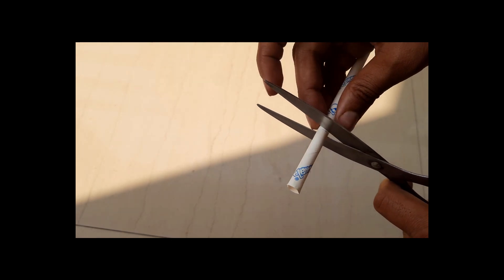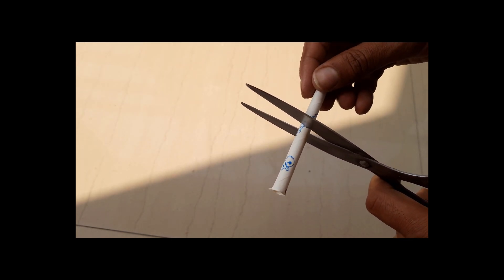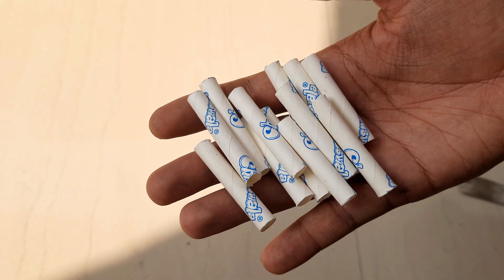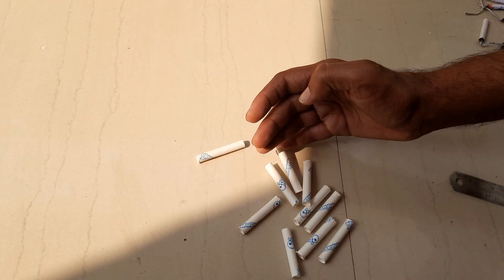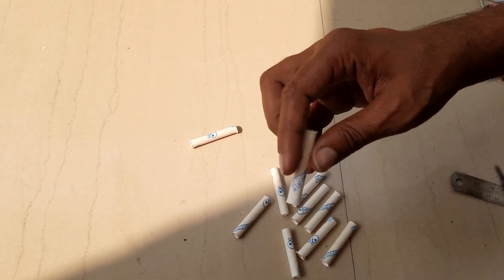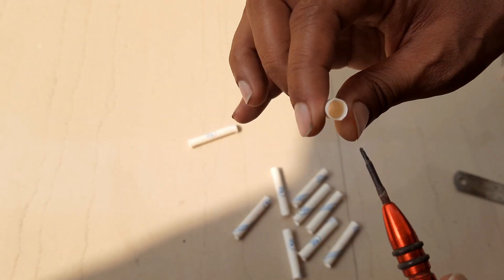To make a barrel I have taken a paper straw, cutting them into equal pieces. The holes should be round so that the rocket doesn't get stuck inside.